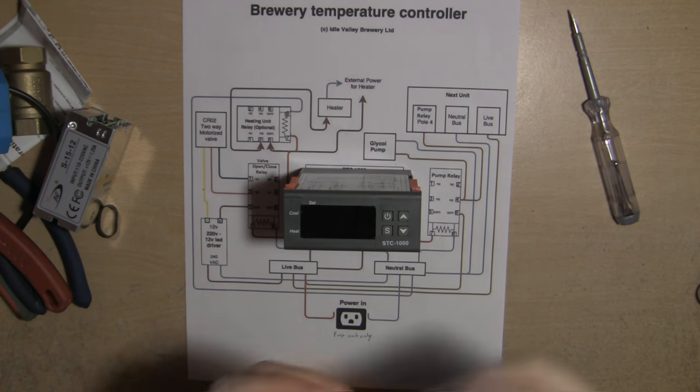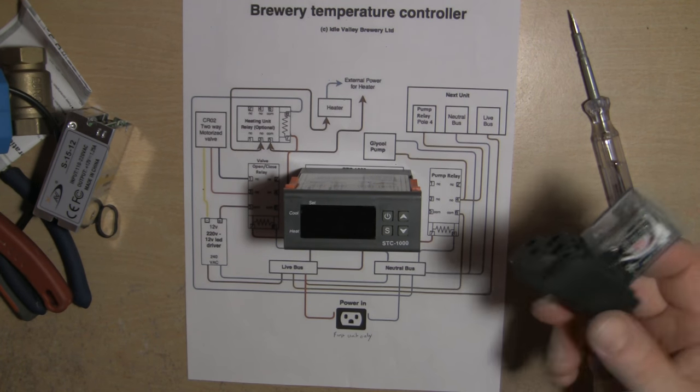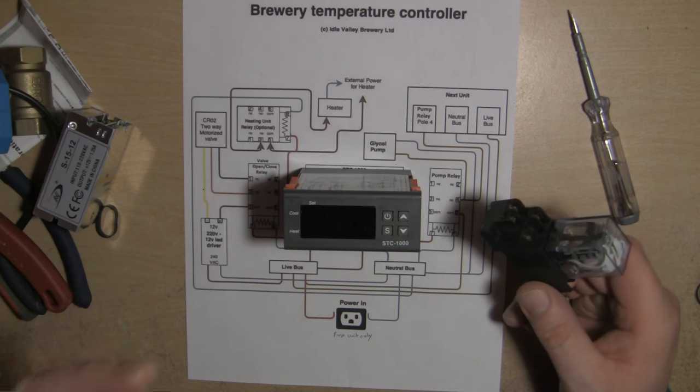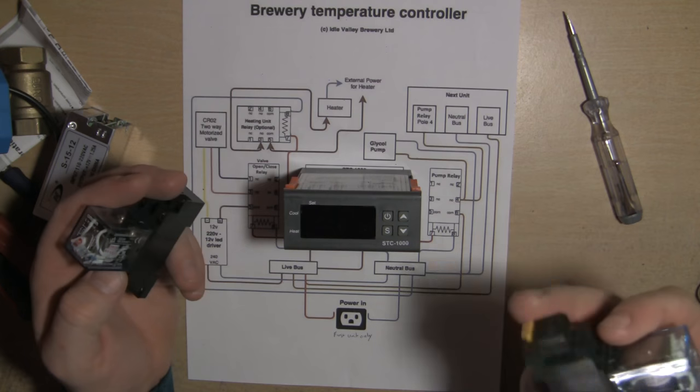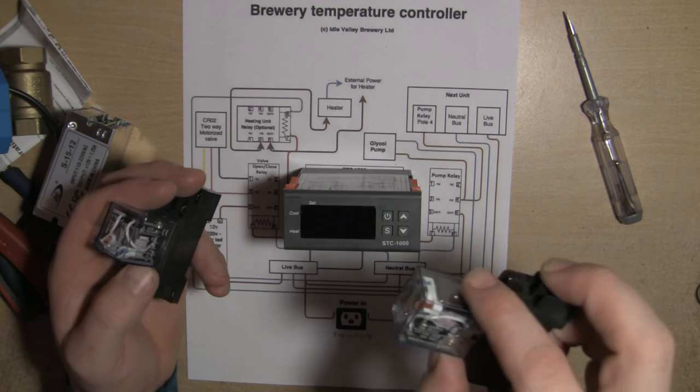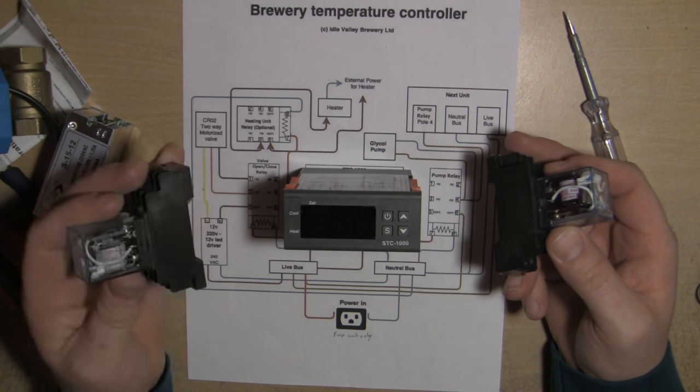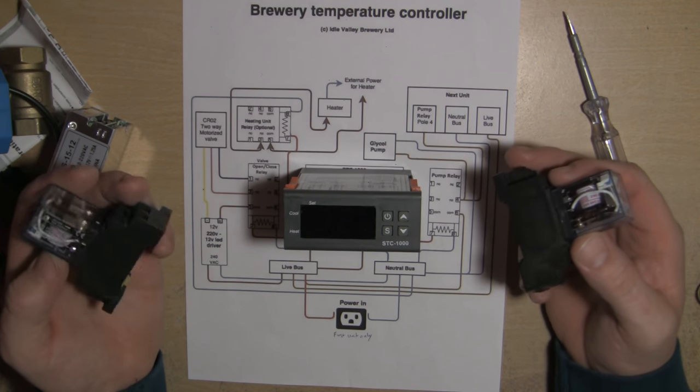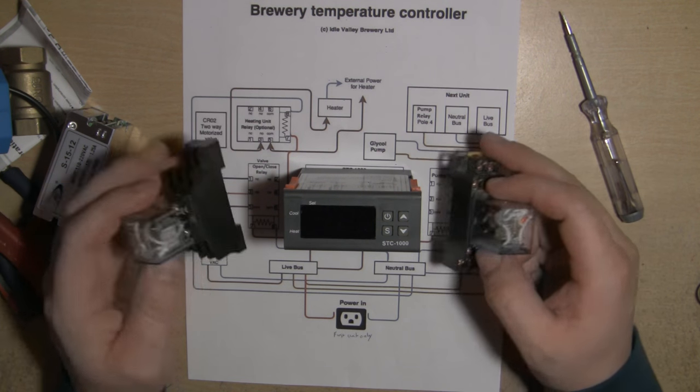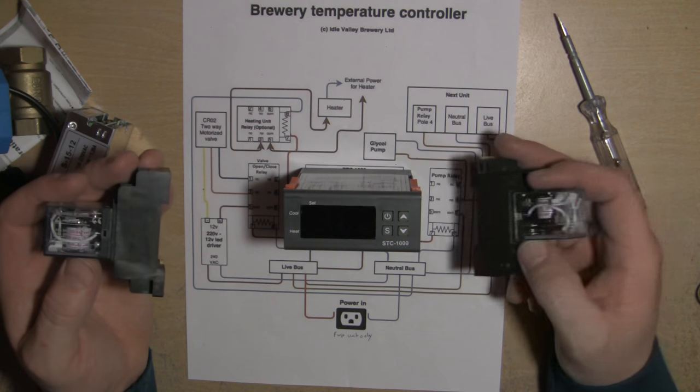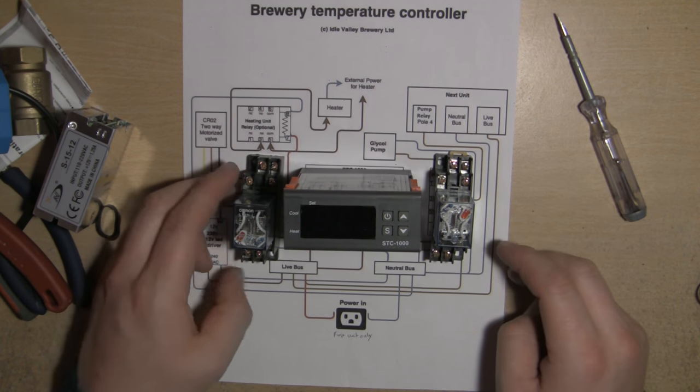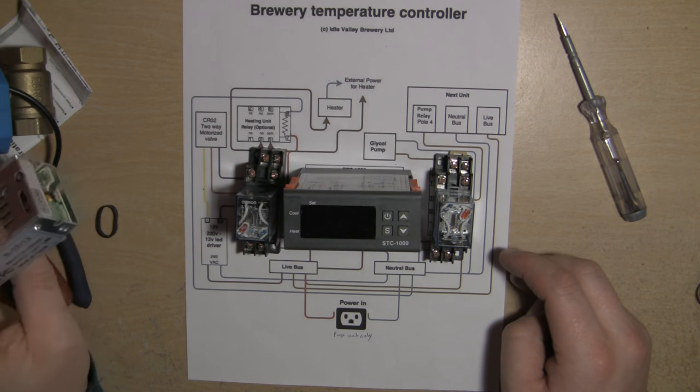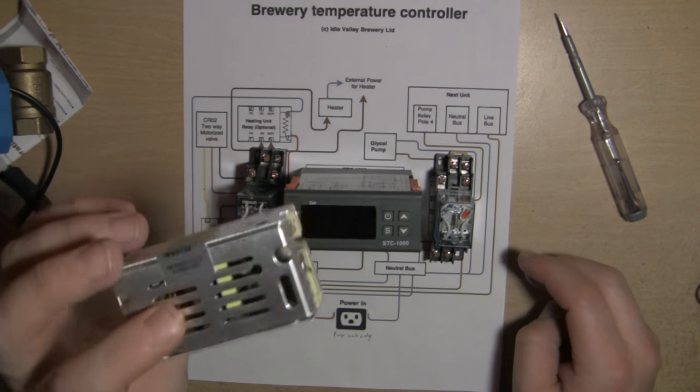We need two of these because we're using 240 volts in. We can use these 240 volt coil relays, and of course these will also handle 10 amps up to 240 volts on the switching side if you wanted to.